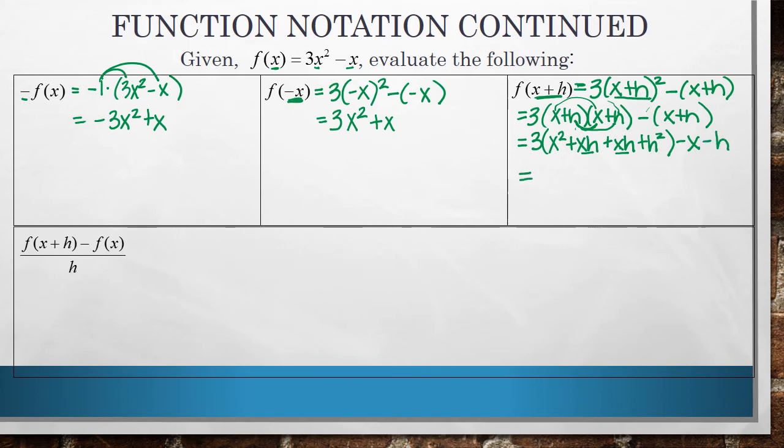All right. Now let's distribute the 3. I think first we can simplify inside of these parentheses. xh plus xh. So I've got one of these. I'm adding another one. So altogether I have two of them. Now I can distribute that 3 through. So I get 3x squared plus 6xh plus 3h squared minus x minus h. And that's as far as we can go. It looks crazy and complicated, but that's it. There's no like terms that we can combine. So we stop there.